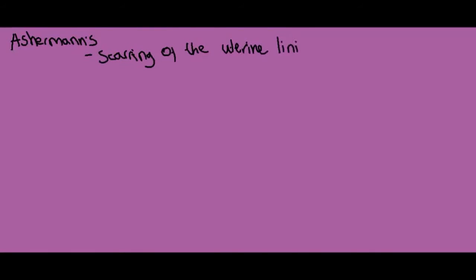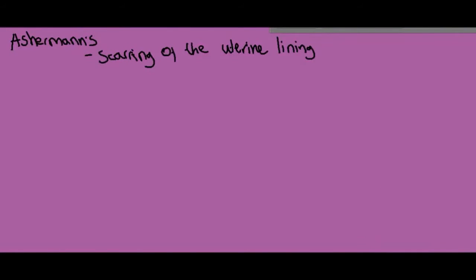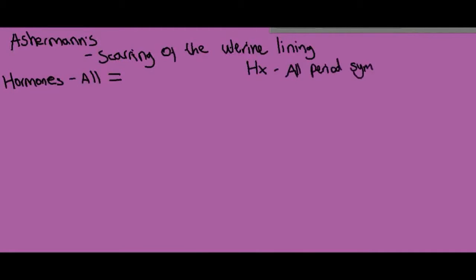The first condition is Asherman's syndrome, which is really just scarring of the womb. All the hormone results will be normal because it's a physical condition. The woman will have all the other symptoms of her period such as cramping and PMS, except bleeding. Because the problem is isolated to the womb lining, examination will pretty much be normal.